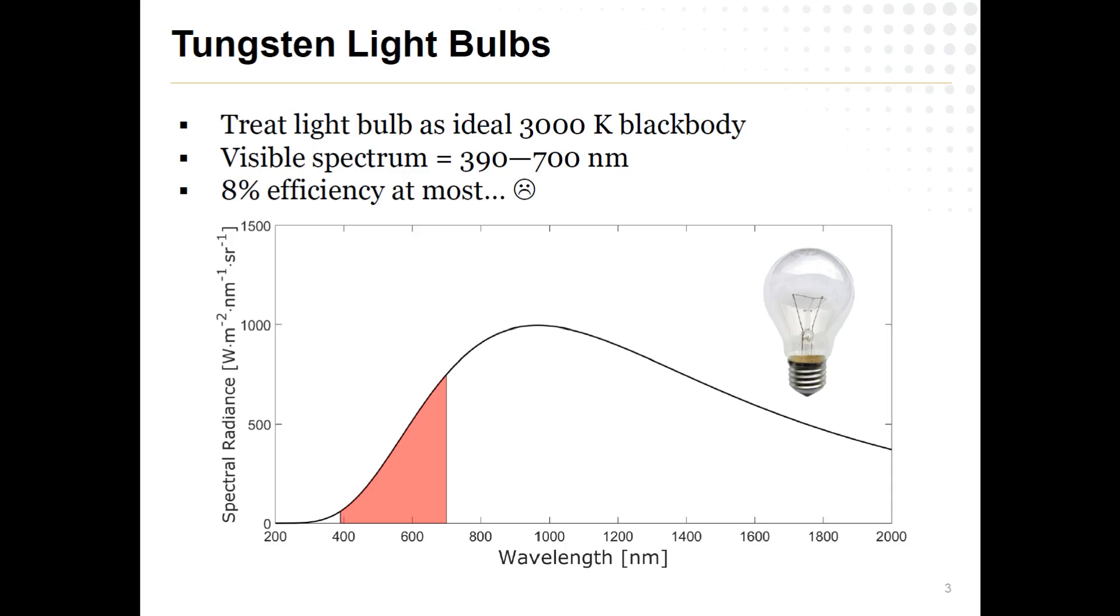Let's kind of frame this in terms of some big national scale problem in terms of energy consumption. A big chunk of our electrical grid is devoted entirely to just making our houses bright or making the world bright. So light emission, light. The classical tool for making dark rooms bright, I guess, is the simple tungsten filament light bulb.